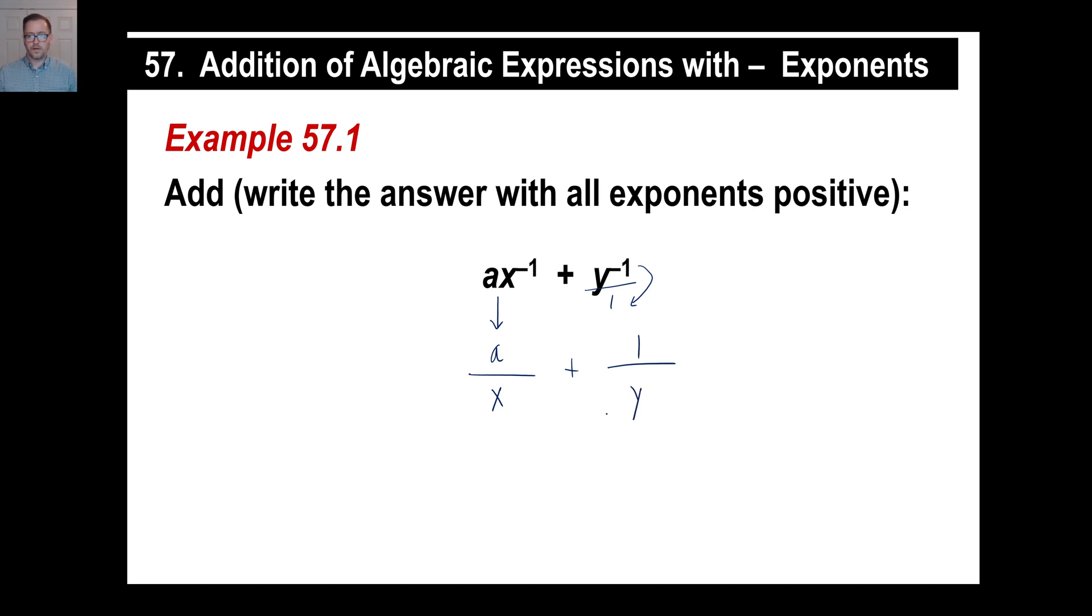Obviously, you can tell the common denominator is just XY, right? So we're going to have to multiply by Y here to make it the same, and we're going to have to multiply it by X here to make it the same.